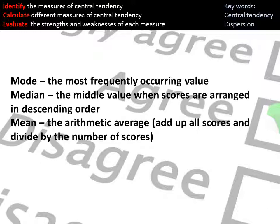Hopefully you will have learned about these before within GCSE maths. We've got the mode, which is the most frequent occurring value. So within a set of data, the number that appears the most.